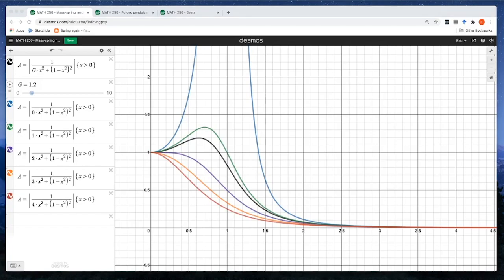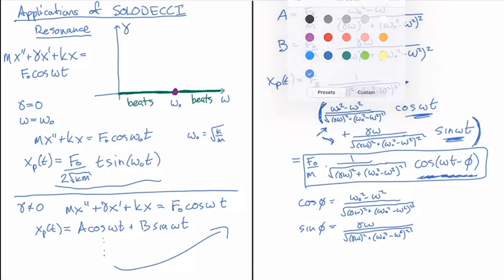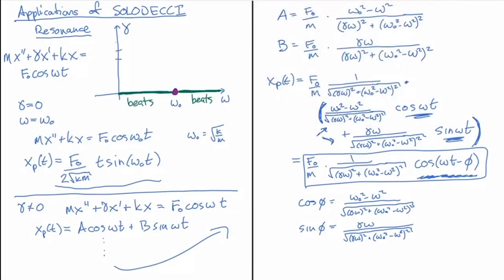Going back to the parameter plane, we can now fill in the rest. For gamma not equal to zero, all the way through the parameter space, the resonance curves show that for small gamma the curve has a tall peak near omega naught, and as gamma increases that peak migrates and eventually disappears, leaving no peak at all. That is the full picture of resonance in a mass-spring system.